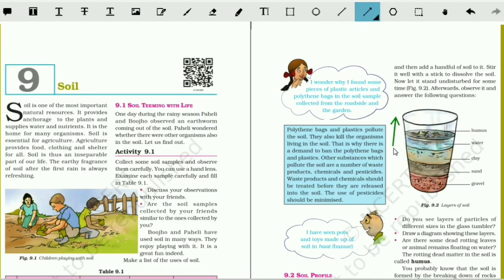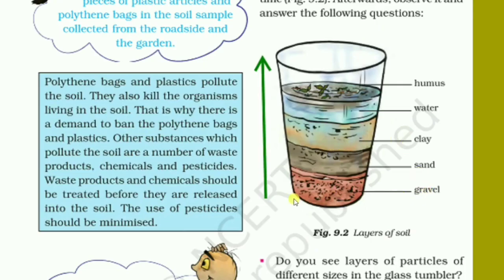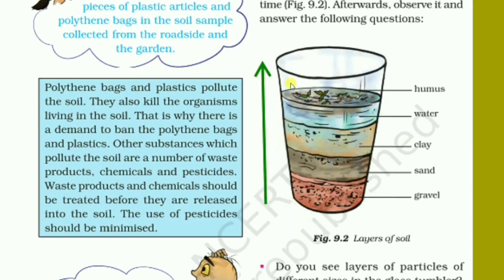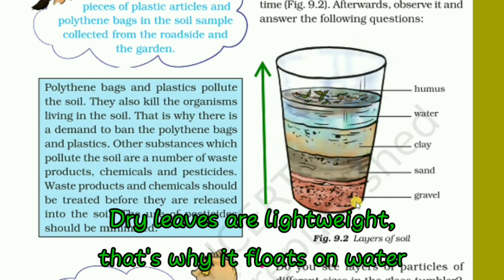So in between them, from gravel to humus, they are arranged according to their particle size. So gravel, the size of the particle will be bigger, then at the top of the glass the particle size will be smaller. In between them, it will be heavier, less heavier, medium size, then smaller sized. So in this way they will be arranged and some layers will be formed.